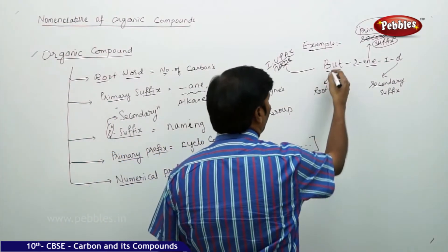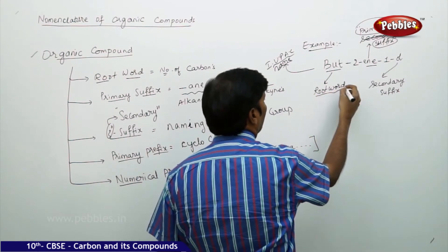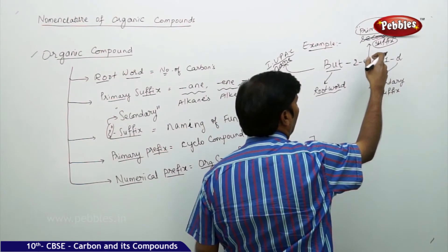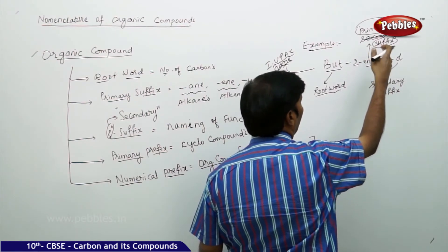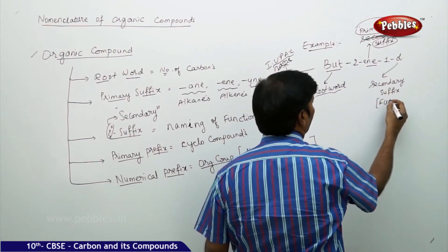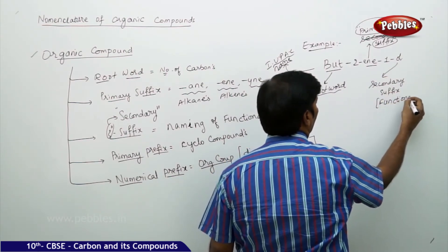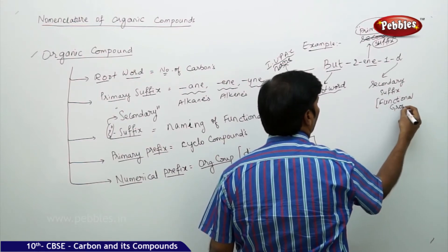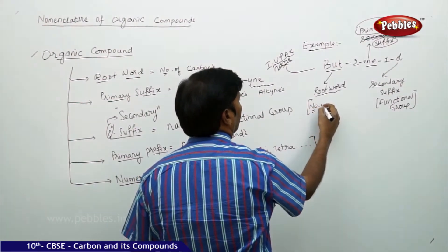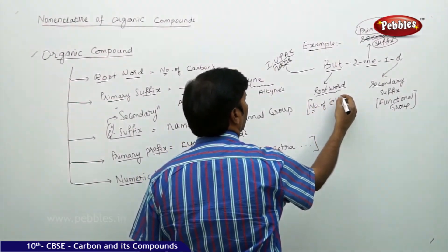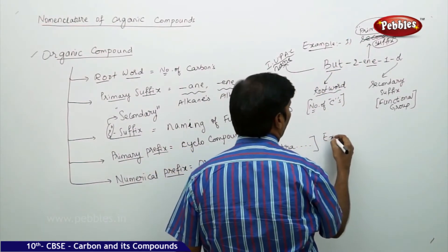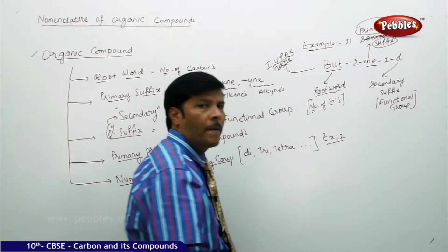'But' represents the root word, which represents the number of carbons. 'En' represents the primary suffix, indicating whether it contains a double bond, single bond, or triple bond. And 'ol' is the secondary suffix, which gives the functional group.